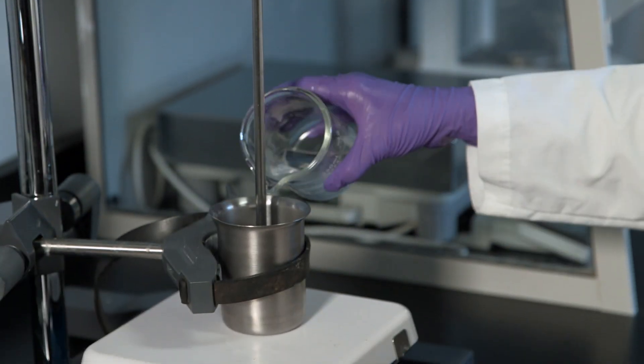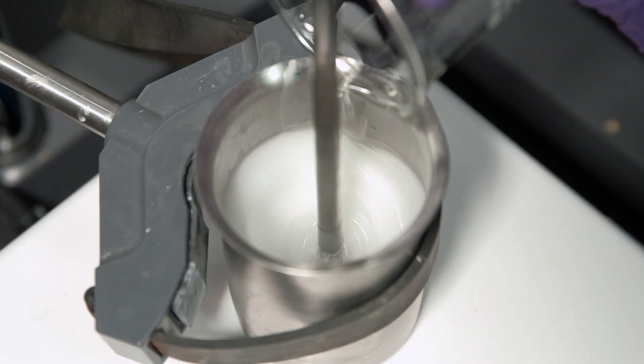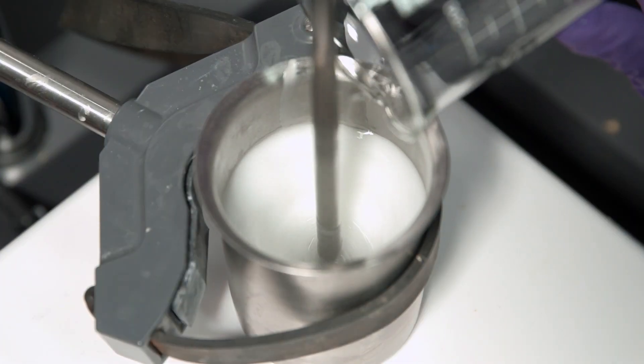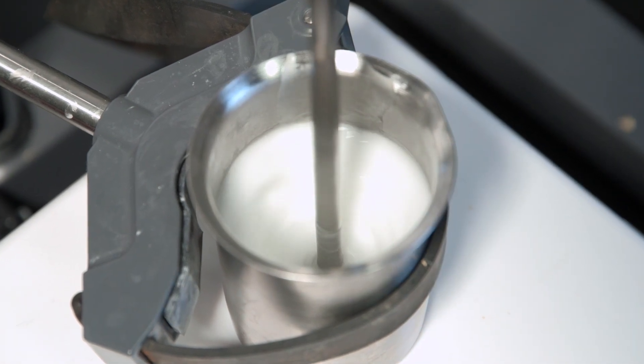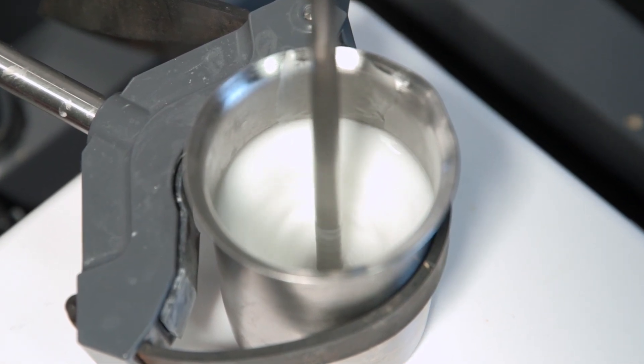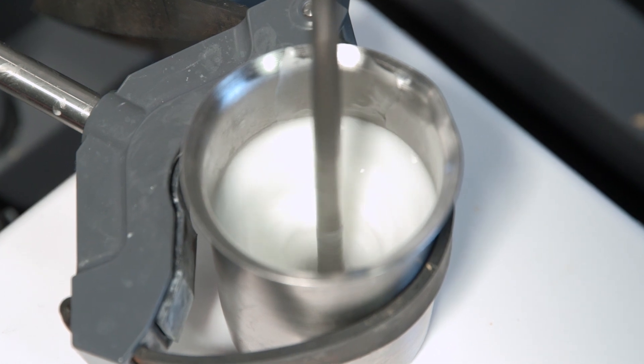The dispersed phase is added to the continuous phase slowly using moderate shear. It is clear that the macro scale emulsion has formed as the two phases change from translucent to a rich white color.